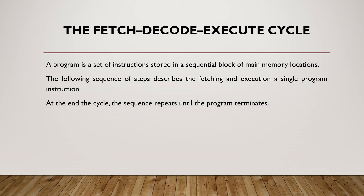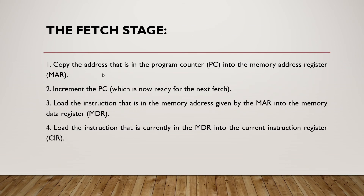The Fetch-Decode-Execute Cycle: a program is a set of instructions stored in a consecutive block of main memory. The cycle is broken down into three parts. In the Fetch stage, we copy the address in the Program Counter into the Memory Address Register, then increment the PC. Next, we load the instruction at the address given by the MAR into the Memory Data Register, and then load the instruction currently in the MDR into the Current Instruction Register. This concludes the Fetch stage.